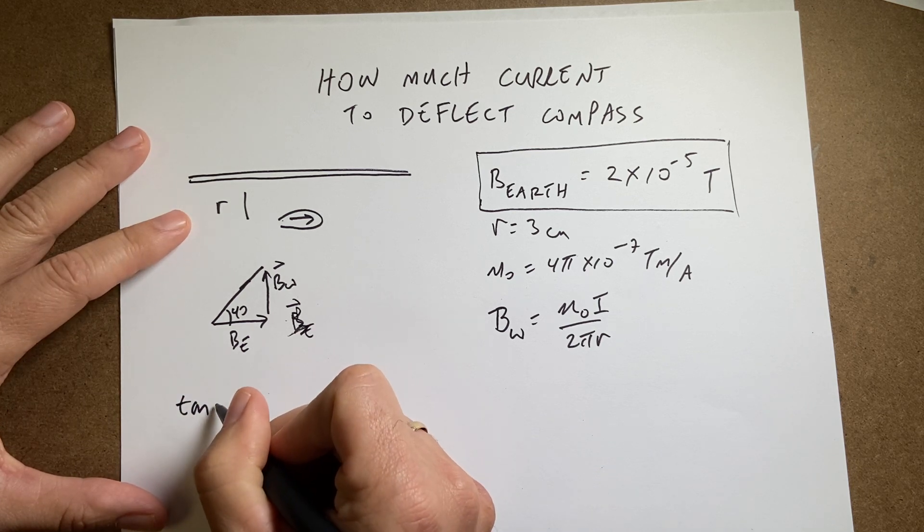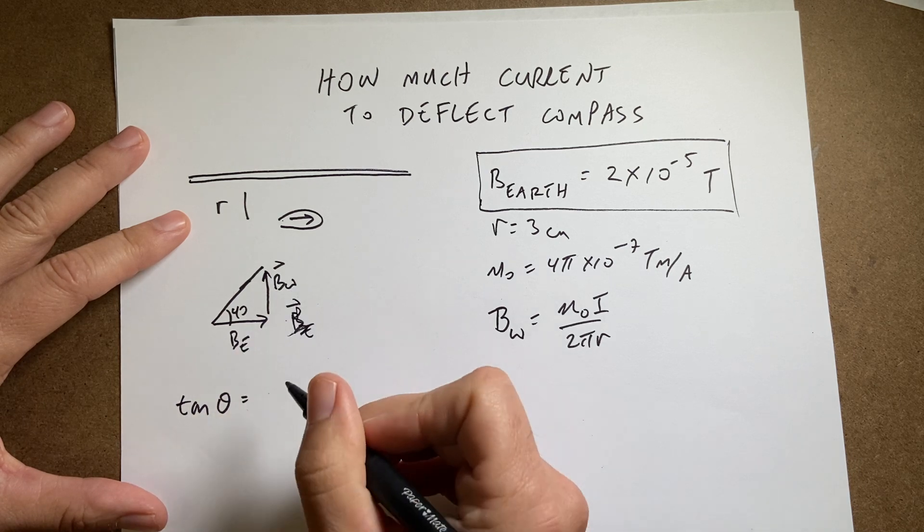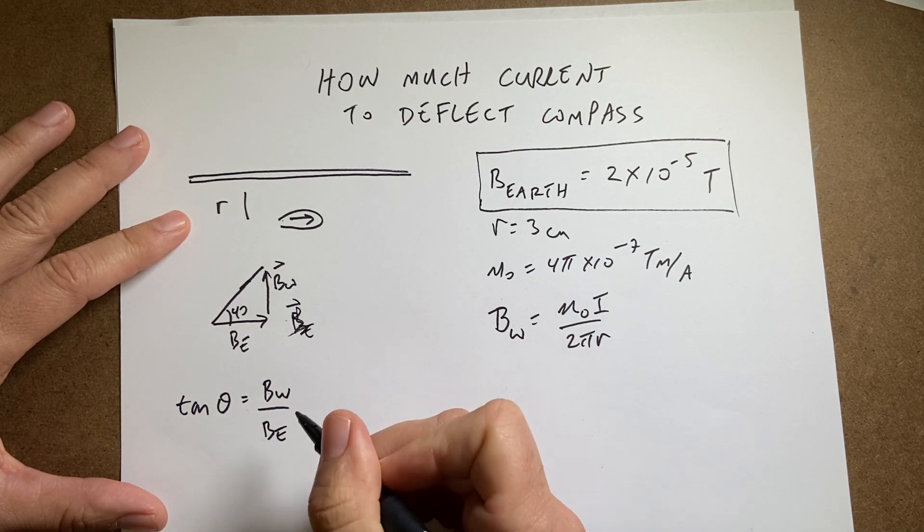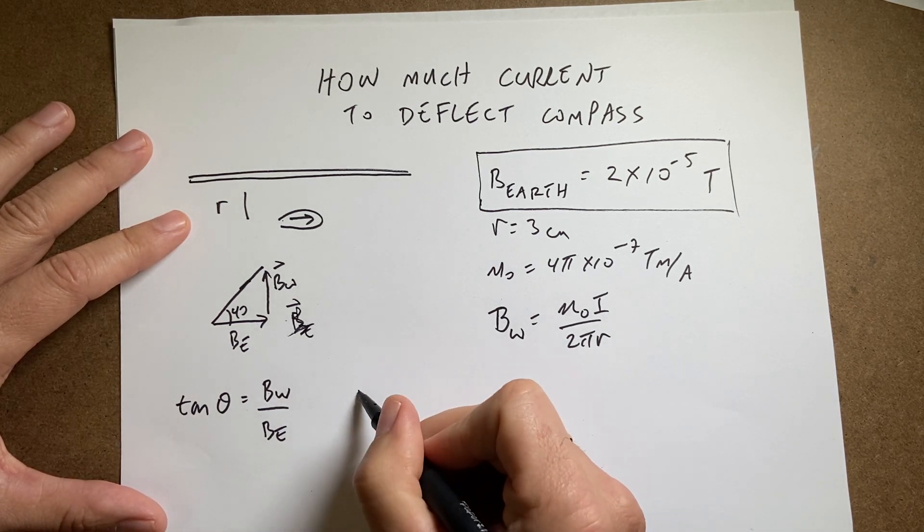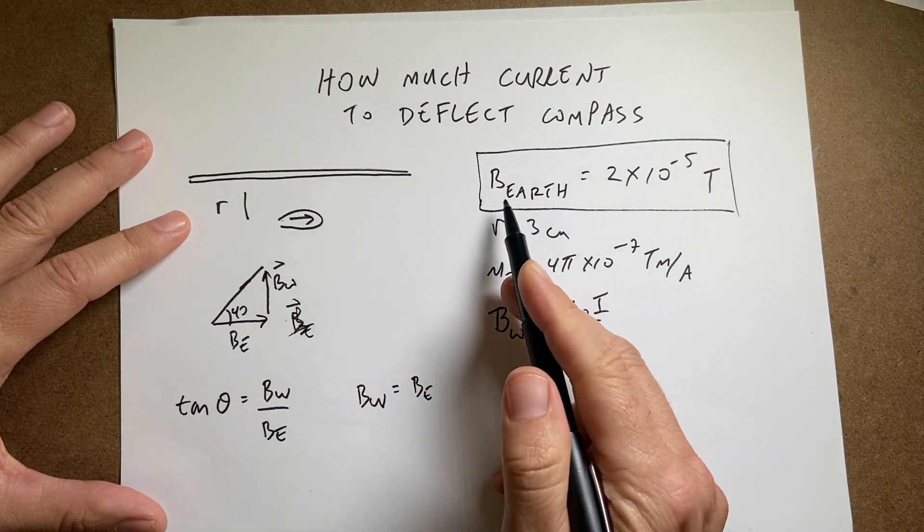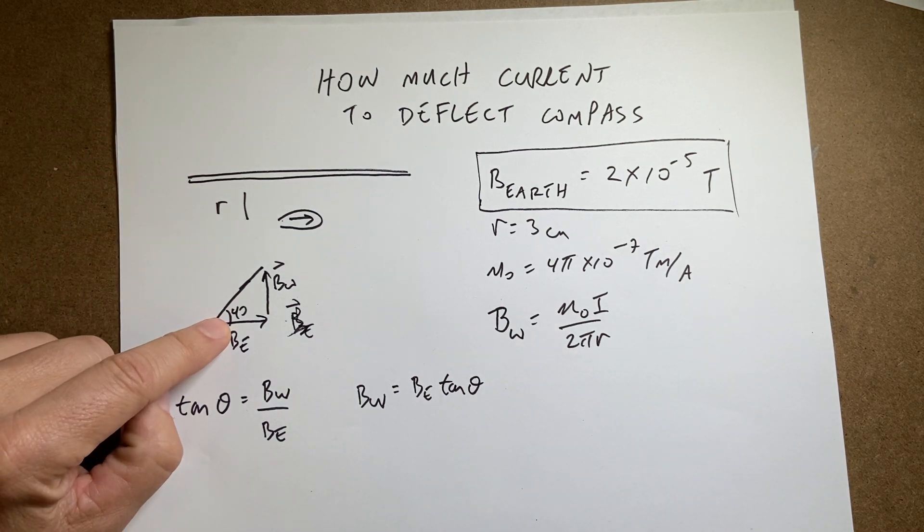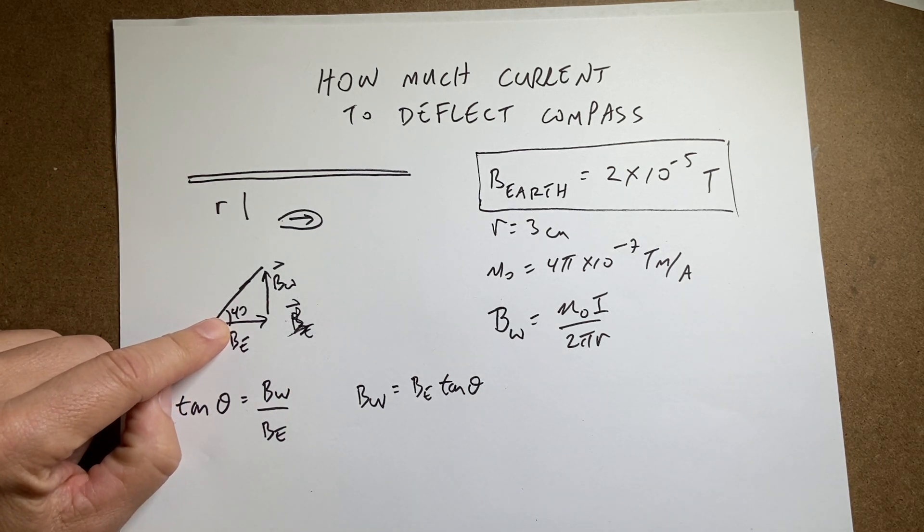The tangent of theta is going to be equal to the opposite over adjacent. So, it's going to be the magnitude of B wire divided by the magnitude of B earth. From that, I can solve for the magnitude of B wire must be equal to the magnitude of the earth's magnetic field times tangent of theta. So, by looking at the deflection, I could get the magnitude of the wire. And you could solve for that now, but I'm not going to do that.